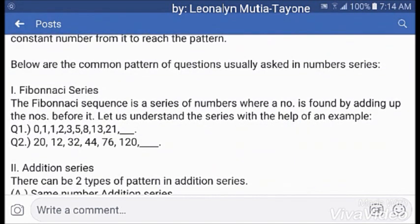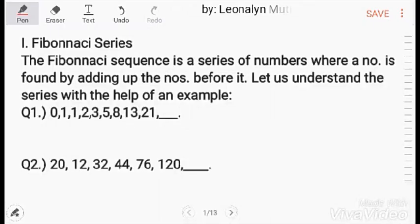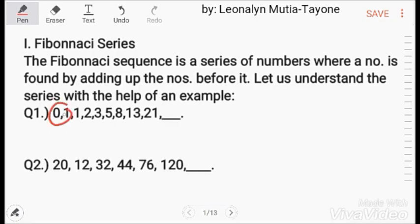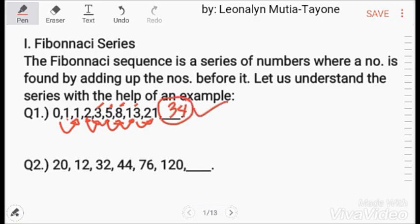Below are the common patterns of questions usually asked in number series. Fibonacci series: The Fibonacci sequence is a series of numbers where a number is found by adding up the two numbers before it. For example: 0 plus 1 equals 1, 1 plus 1 equals 2, 1 plus 2 equals 3, 2 plus 3 equals 5, 3 plus 5 equals 8, 5 plus 8 equals 13, 8 plus 13 equals 21, and 13 plus 21 equals 34. So 34 is the answer.